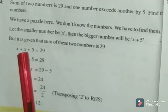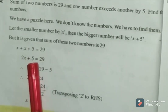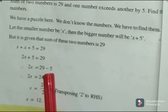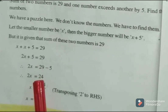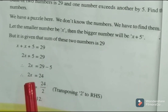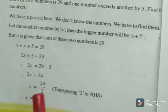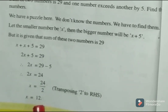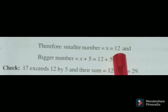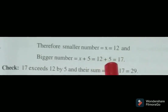It is given that the sum of these two numbers is 29. So X plus X plus 5 equals 29, which gives 2X plus 5 equals 29. Transposing 5 to RHS it becomes minus 5, so 2X equals 29 minus 5 equals 24. X is multiplied by 2, so transposing 2 to RHS gives X equals 24 divided by 2, that is equal to 12. Therefore the smaller number X equals 12 and the bigger number X plus 5 equals 12 plus 5, that is equal to 17.